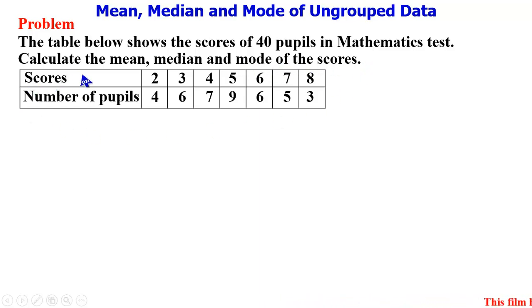We have the scores ranging from 2 to 8, and the number of pupils for each score is given. For our solution here, we're going to recreate the table in a vertical form.